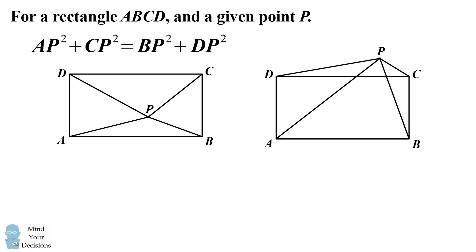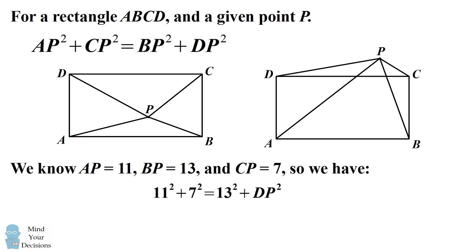This equation will make quick work of the problem. We were given that AP equals 11, BP equals 13, and CP equals 7. We can substitute those values into our equation and then we can simplify it and solve that DP must be equal to 1.